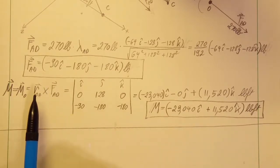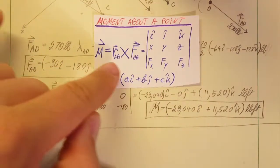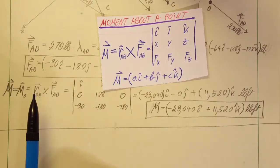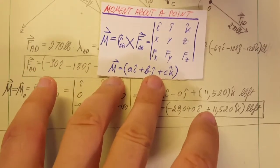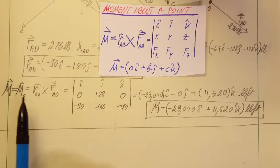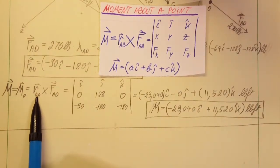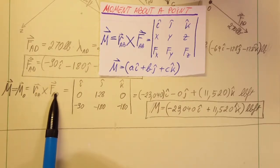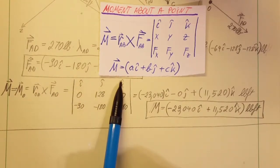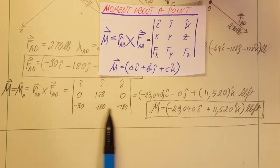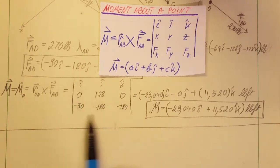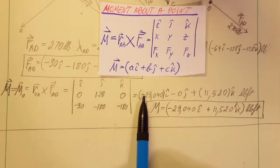But we're gonna use the cross product right here, which is the moment about the point. So that is the cross product of the position vector cross the force. i, j, k, position vector, force component. We're gonna do our matrix.